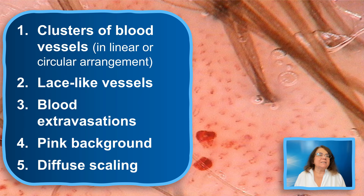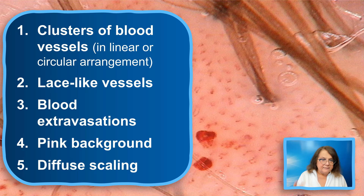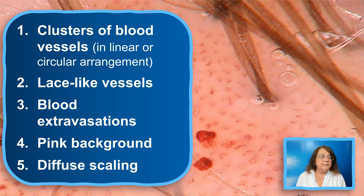To summarize this presentation: the key trichoscopy features of scalp psoriasis are, first, clusters of regularly distributed blood vessels in either a linear or circular arrangement; second, the presence of the so-called lace-like blood vessels; third, blood extravasations; fourth, the pink background; and fifth, diffuse scaling. Of course, in most cases you will not see all five features — just a few of them, or even only one may be present.